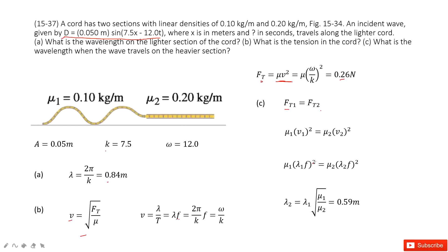And then input v1 and v2 in the function with λ. So v1 is λ1 times f. v2 is λ2 times f. And the frequency can be cancelled. Then we can find λ2 in this function.